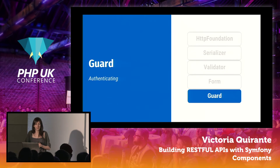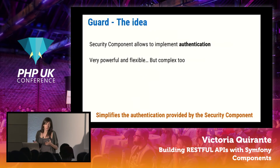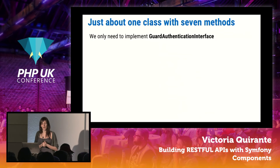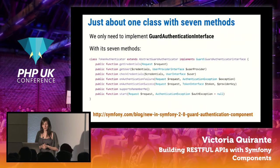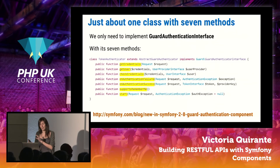The final component is Guard, which helps us with authentication. In Symfony there is a more complex component called Security — really big, powerful, and flexible, but quite complex. Guard was created to simplify this. They have simplified it so that you only have to implement one interface: `GuardAuthenticatorInterface`, which has seven thin and simple methods that are easy to understand and implement. Of course, you still need to implement authentication mechanisms like JSON Web Tokens or OAuth, but Guard makes that work easier and prepares you for it.